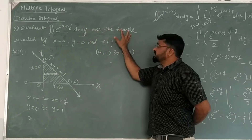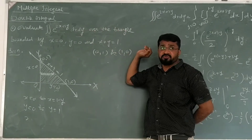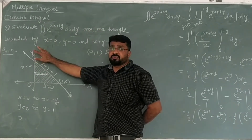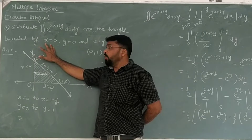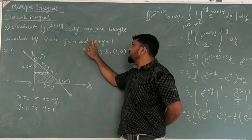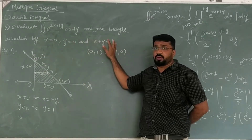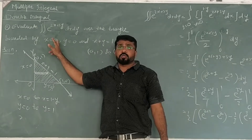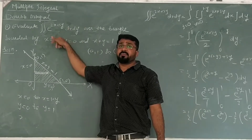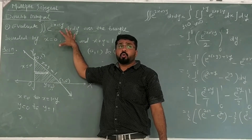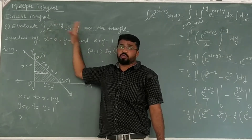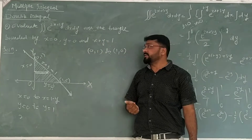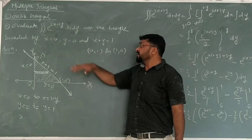The region is given to us over the triangle bounded by x equals 0, y equals 0, and the line x plus y equals 1. These are three lines. If the three lines bound a triangle, we have to evaluate the integral over that region. So first we will have to draw the region.